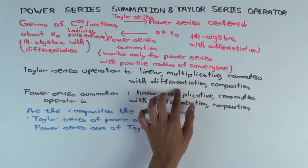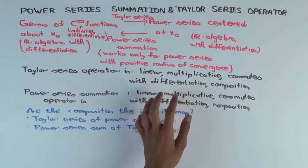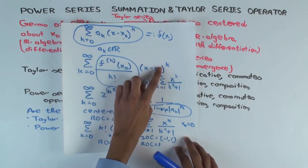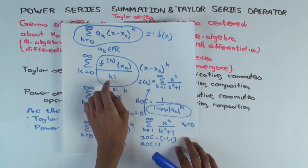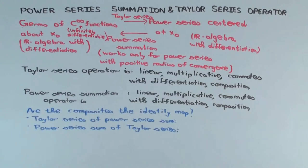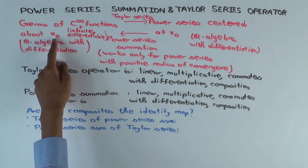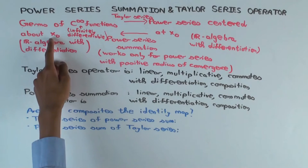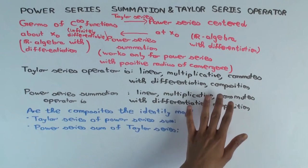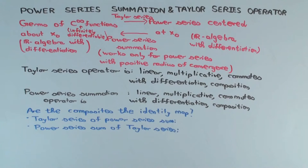The Taylor series operator also commutes with differentiation: the Taylor series of the derivative equals the formal derivative of the Taylor series as a power series. That's where the k factorials are crucial — when you differentiate, you get a k from the exponent, the power goes down by one, the k and k factorial cancel to give (k−1) factorial. Finally, for composition: if you're careful that F is centered at G(x₀), you can show the Taylor series of a composite is the composite of the Taylor series.